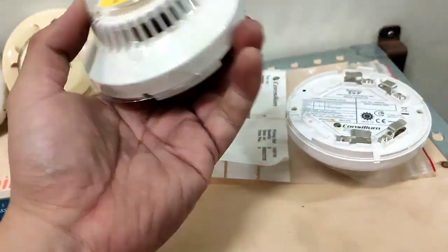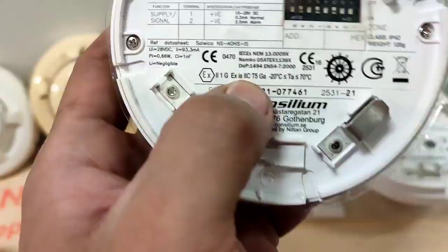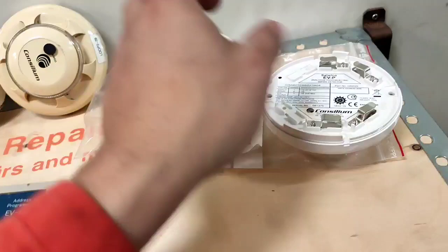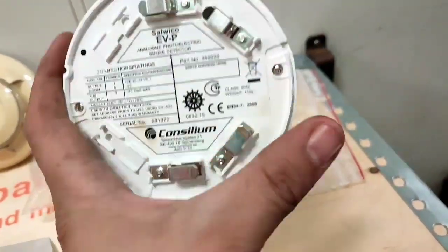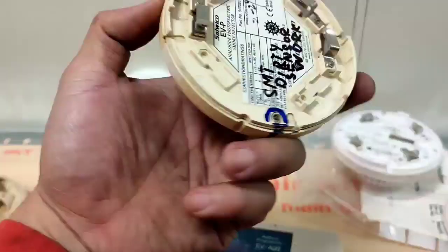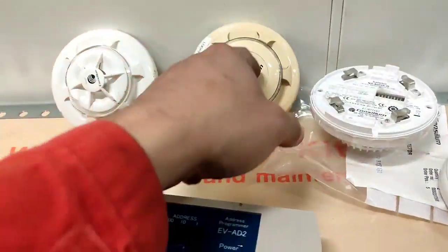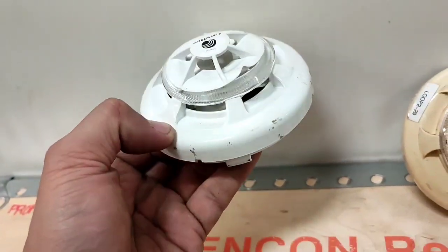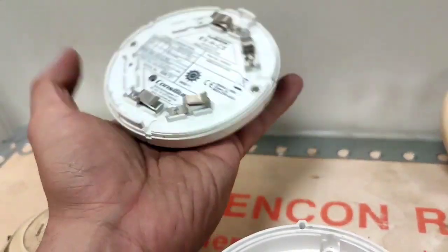This is the addressable with a DIP switch Consilium. This one we need to program with our programming kit. This is the old one, same EVP Salveco. This is smoke and then this is heat. We need to reprogram this one and set address for this detector.